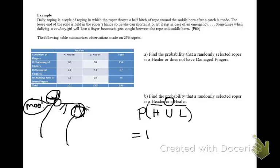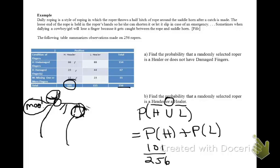So this becomes the probability of being a header plus the probability of being a healer. The probability of being a healer is 66 with undamaged plus 23 with damaged plus 12 with missing one or more fingers for a total of 101 headers out of 256 ropers total. The probability of being a healer is 155 out of 256 total.